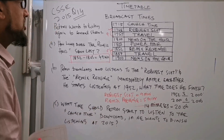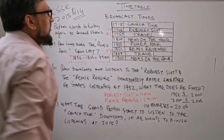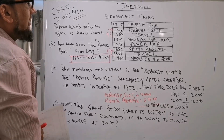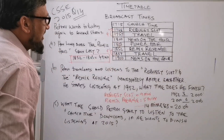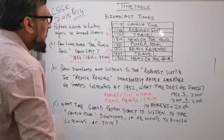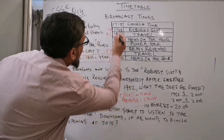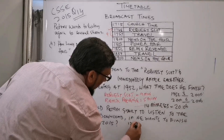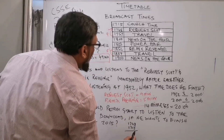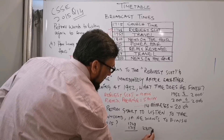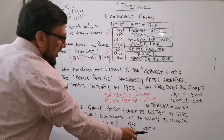So Petrov wants to finish the program at 2015. Let me look at the Church Time. The church time starts at 1715 and the duration is from 1715 to 1748. So 1748 take away 1715 equals 33 minutes. So the duration of the Church Time is 33 minutes.